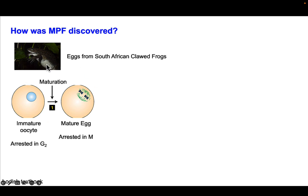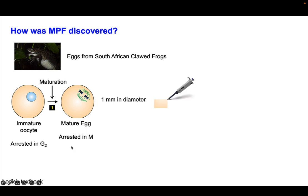Scientists then turned to a model system using eggs from the South African clawed frog. These eggs have the advantage of being very large and easy to manipulate. The eggs can exist in an immature form called an immature oocyte, arrested in G2 with an intact nucleus. With some maturation event, the egg matures and becomes arrested in M phase. Being about one millimeter in diameter, scientists can insert a pipette into the cytoplasm and extract it to do transfer experiments to test whether something in the cytoplasm causes mitosis.